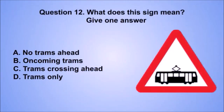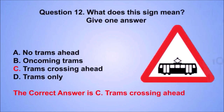Question 12. What does this sign mean? The correct answer is C: Trams crossing ahead.